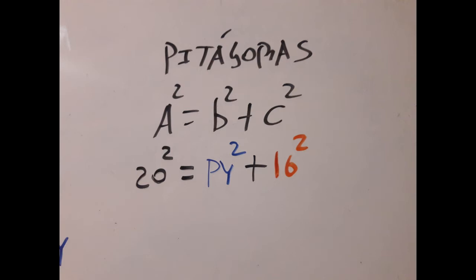A square is equal to b square plus c square. A square is the hypotenuse, is 20 square, is equal to py square plus 16 square.